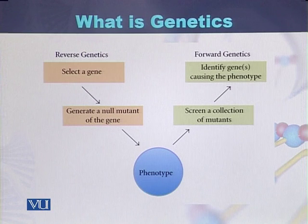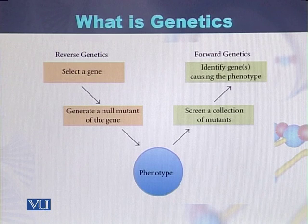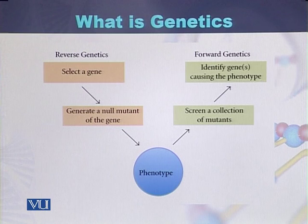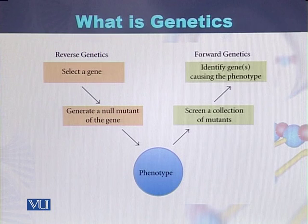If we want to study genetics in a reverse pattern, then a researcher or geneticist has to select a particular gene, then create certain mutations in that gene, and then identify the phenotype based on the mutations created in that gene. If this methodology is used, then it is called reverse genetics.